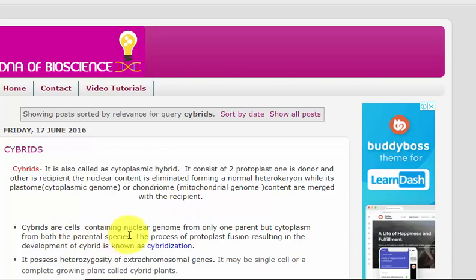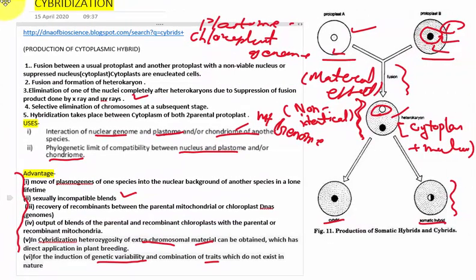And the cybrids are cells containing the nucleus genome from only one parent but cytoplasm from both the parents. And the process of protoplast fusion resulting in this development is called the cybridization. So this is the additional note of cybrid. You can refer to it. This is all about the cybridization process.